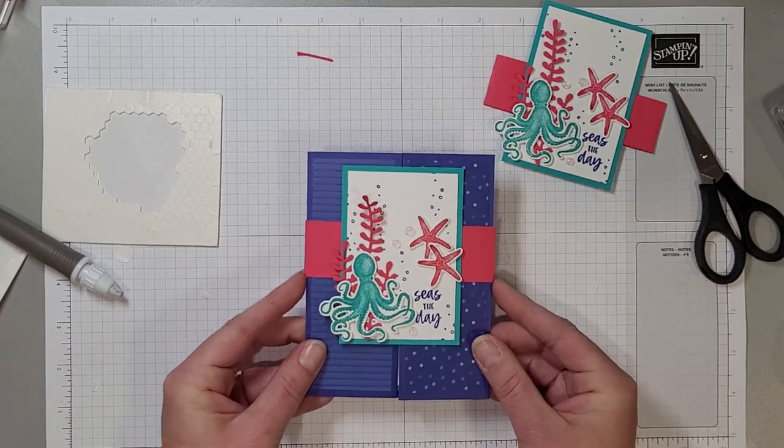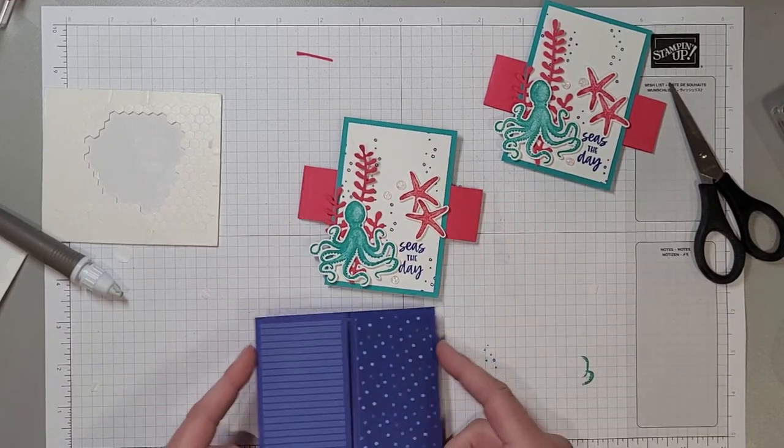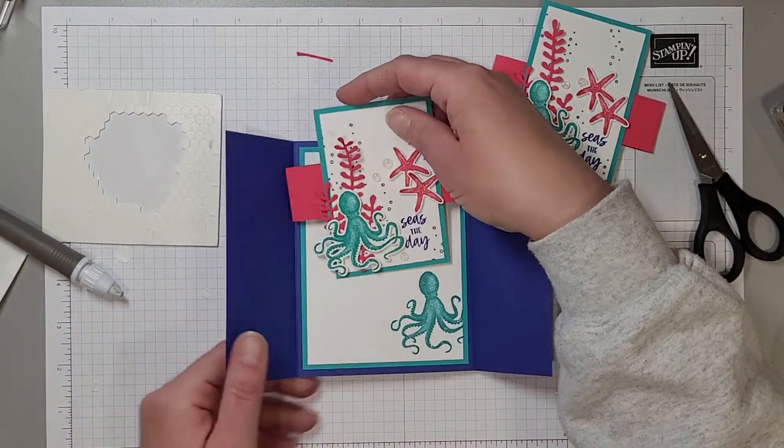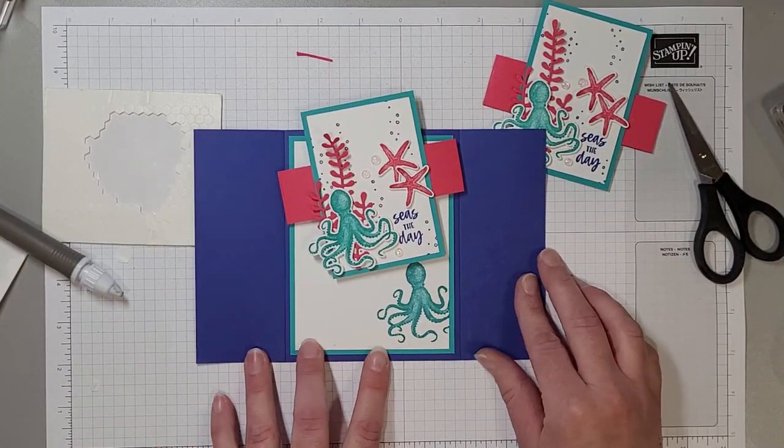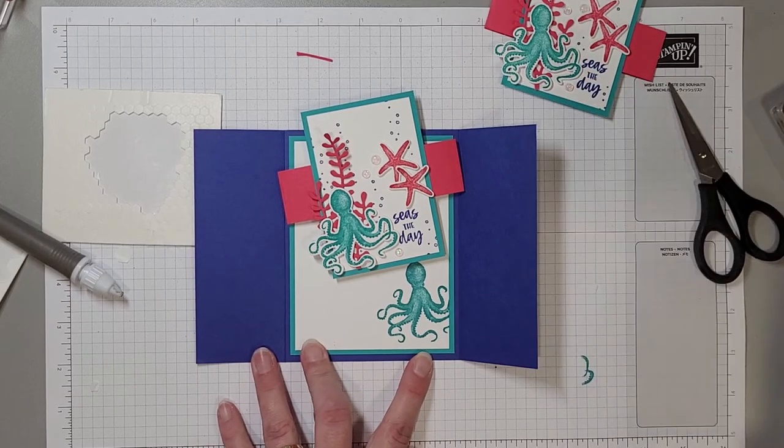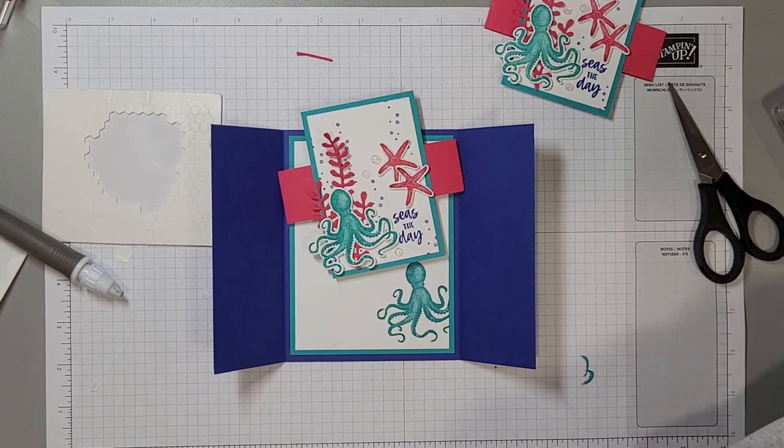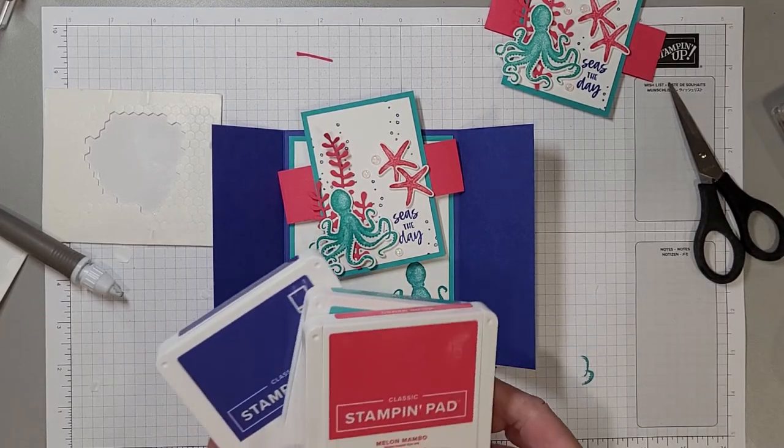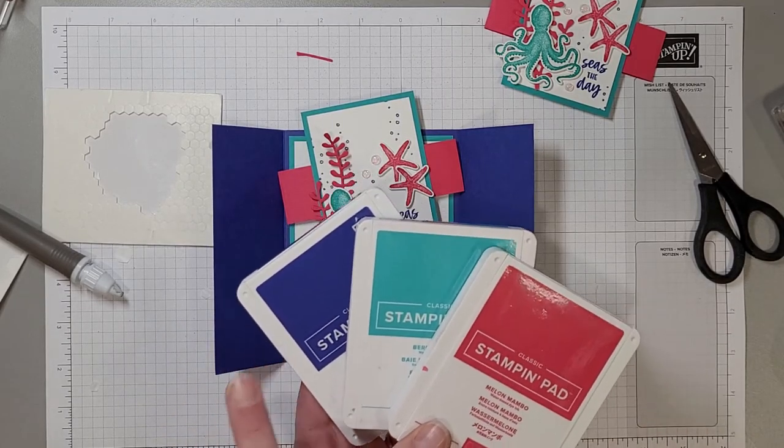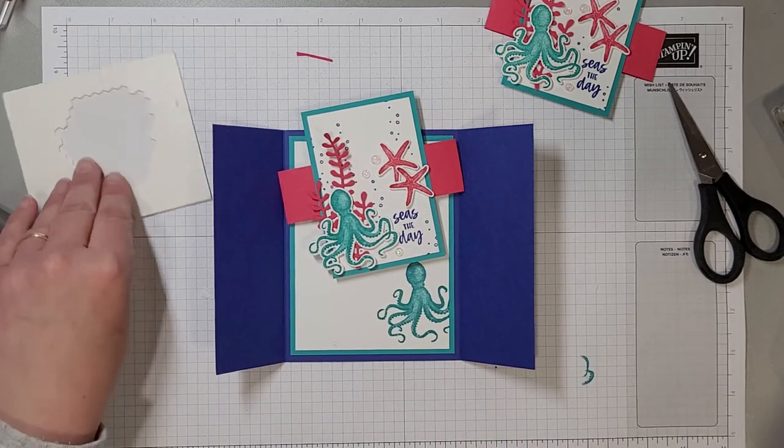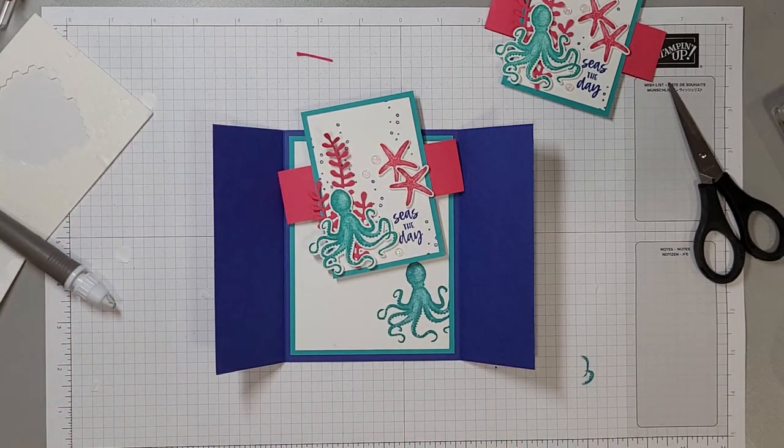I'm just attaching that to the center making sure it's straight on either edge, centered on the card. Give it a little pressure to adhere it. And there's our beautiful gatefold belly band card using the Seize the Day stamp set. We've got this beautiful octopus on the inside as well. And it was a lot of fun to create using this color scheme that I now have fallen in love with.